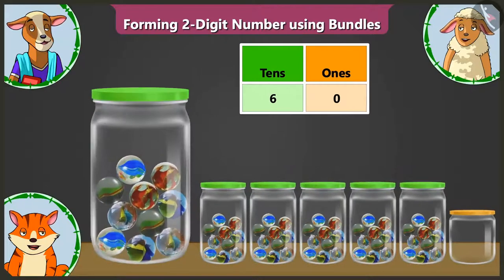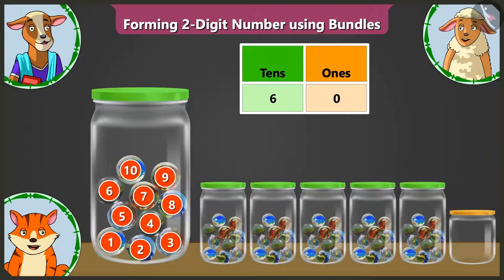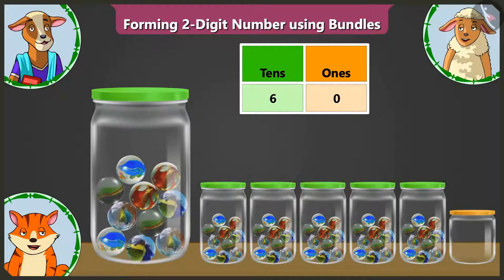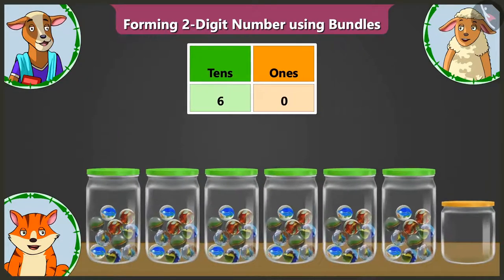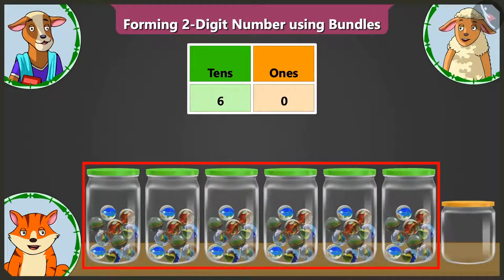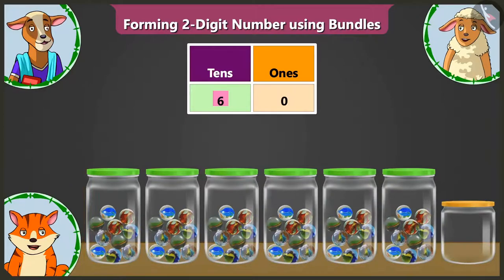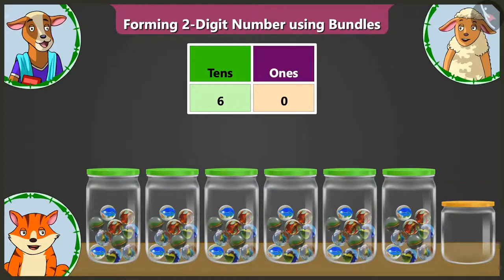Understood, children? A group of ten objects is called one group of tens. Whatever the number of groups you have, write that number in the tens box. When there is not even one object remaining, write zero in the ones box.